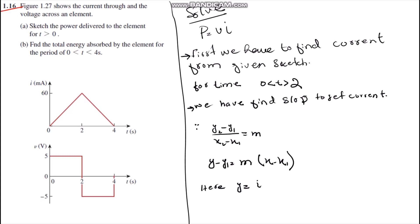In this question, we have given a voltage in the form of a diagram and a current also in diagram form. The question asks us to find the power delivered to the element and the total energy absorbed by the element from 0 to 4 seconds.